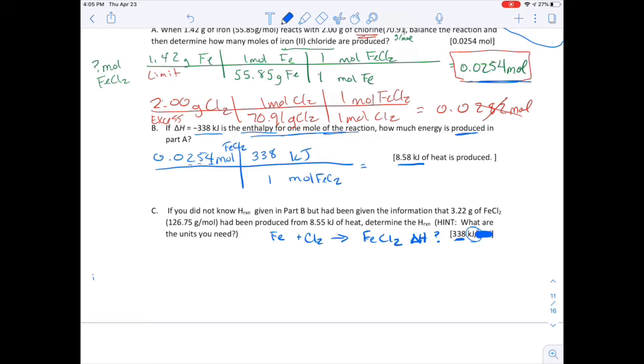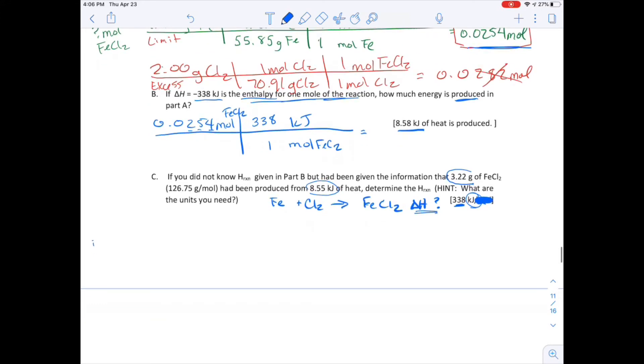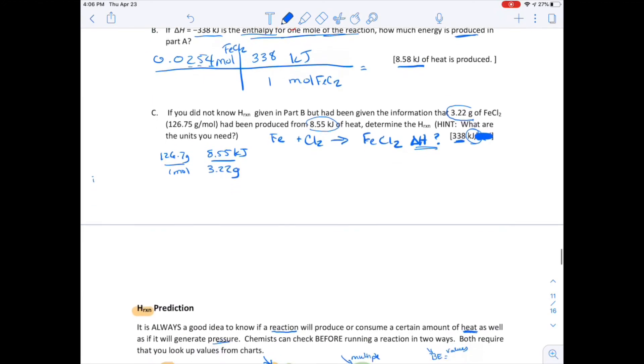So we're going to look at this third section, part C. Notice the units on this was supposed to be a kilojoule. So we don't know, I know earlier we did use it. We're pretending we don't know the delta H for this reaction. If you read these really carefully, I have two units that are tied together, but they're not right beside each other. It's saying that this many grams has been produced from this much heat. So I know not only that I have 126.75 grams in a mole, I also know that I have 8.55 kilojoules in 3.22 grams. Can you see how they're tied together? That many produce this much heat. Those two numbers are tied together. That's why this is kind of a tricky problem.